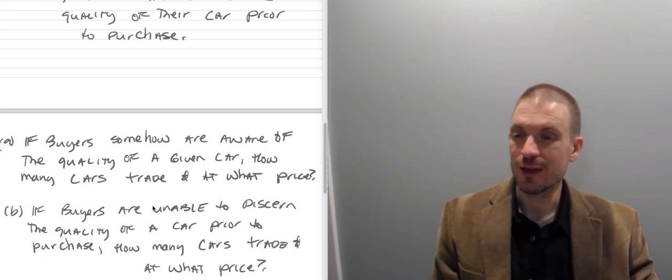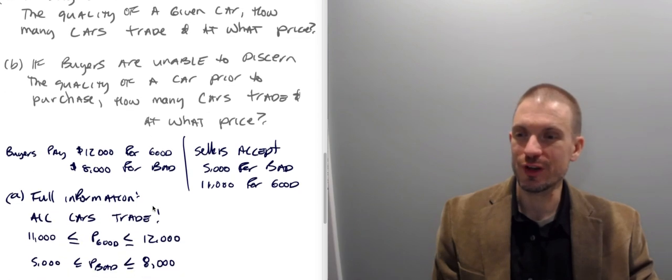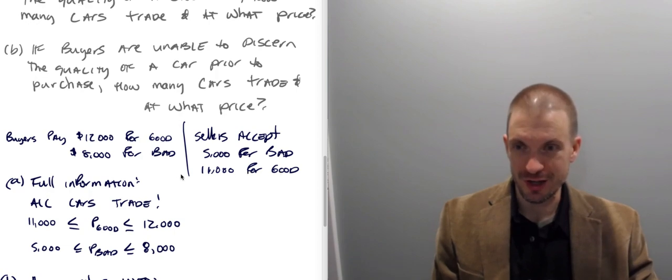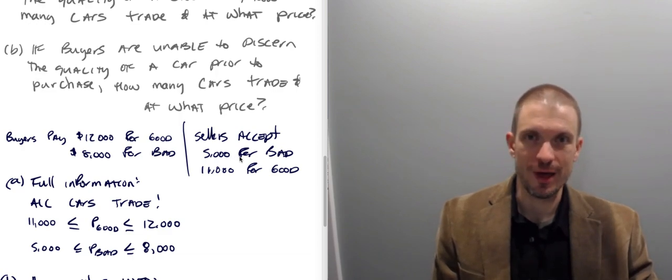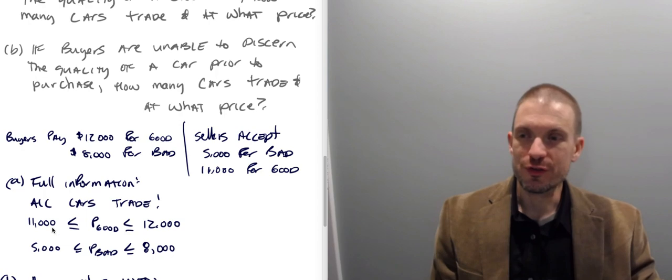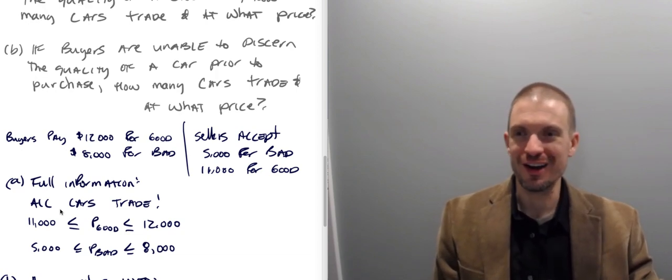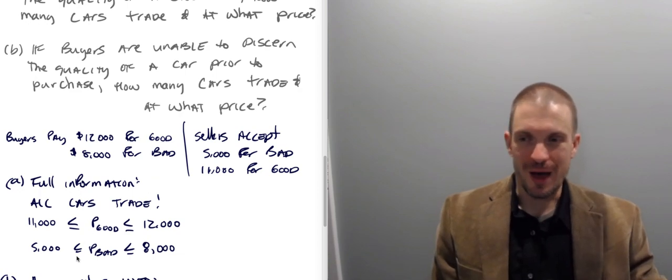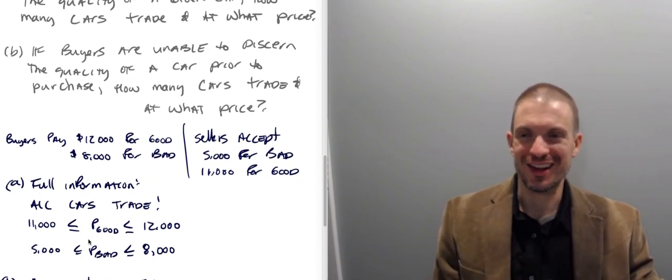So first off, let's answer part A. Remember, remind ourselves of the willingness to pay. Buyers are willing to pay $12,000 for a good car. Sellers would accept $11,000 for a good car. Buyers are willing to pay $8,000 for a bad car. Sellers are willing to accept $5,000 for a bad car. If there's full information, all cars trade because buyers of good cars identify good cars and then pay up to $12,000 for it. Buyers of bad cars identify bad cars and then are willing to pay up to $8,000 for it.